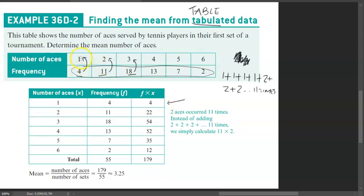Then these 11 people contributed 22 aces because each one of them had scored two aces within the tournament. These 18 people contributed three aces each. So all up, they contribute 54 aces. When we find out the amount of aces for each group, 52, 35, and 12, we add this all up for our total amount here.